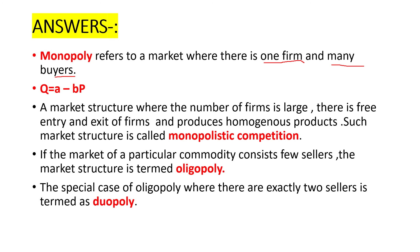The equation for the demand function is: Q = a − bP. What is monopolistic competition? It is a market structure where the number of firms is large, there is free entry and exit of firms, and firms produce homogenous or similar products. Such market structure is called monopolistic competition.